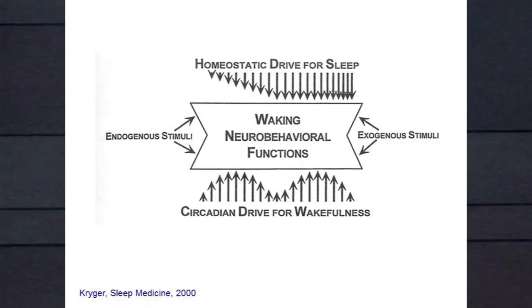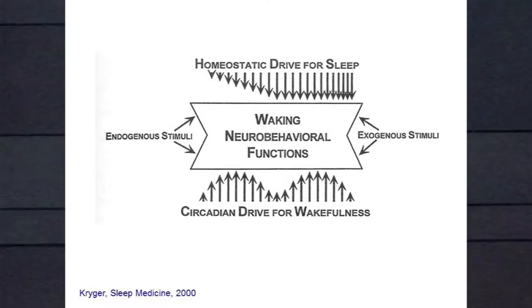What are the factors that govern our sleep-wake cycle? There's the homeostatic drive for sleep — the longer the time since your last awakening, the greater the drive to fall asleep. If you've ever been on shift work, worked 24 hours straight, the longer you're up, the more significant this drive is to put you to sleep. There's also a circadian drive for wakefulness and sleep, which cycles on a 24-hour basis.